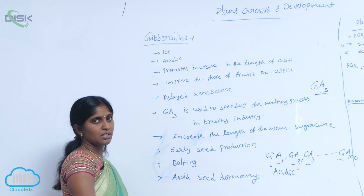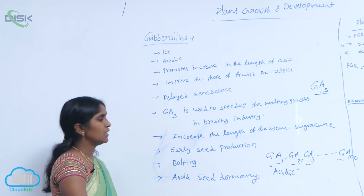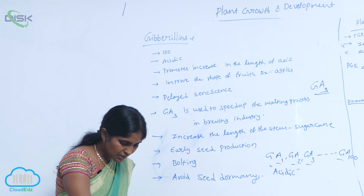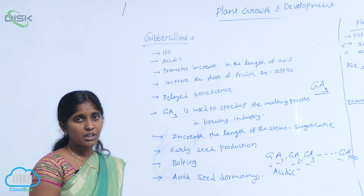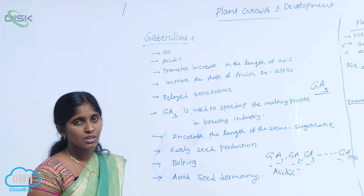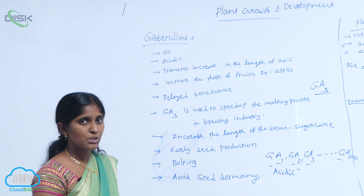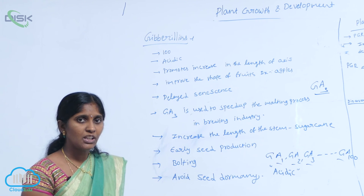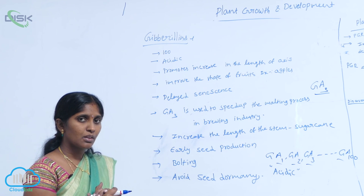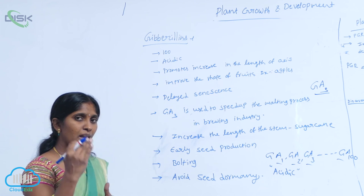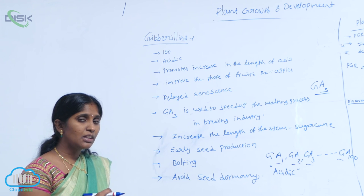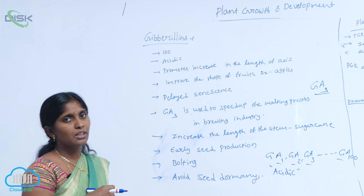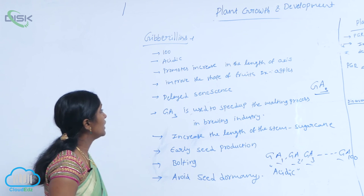Early stem production is promoted by gibberellins. Inter-nodal elongation is called bolting. For example, in cabbage, the inter-nodes are very close together and the plant looks like a rosette form. Inter-nodal development is needed for the plant to grow, and this inter-nodal increment is done by gibberellins.